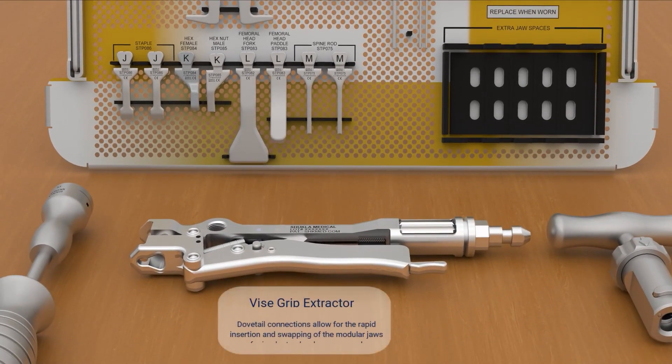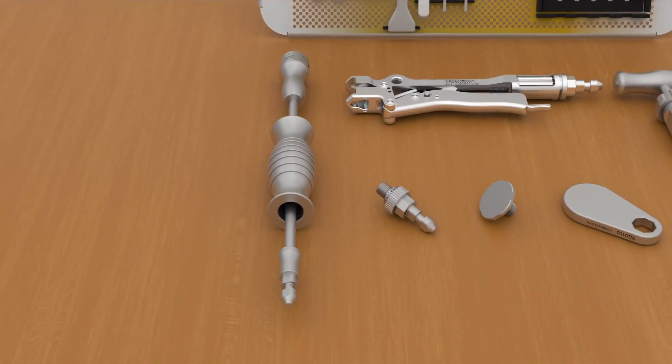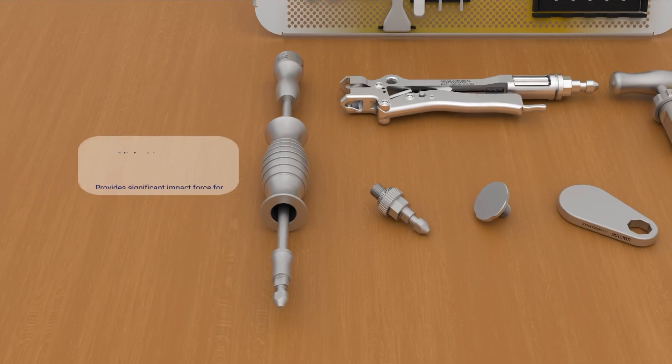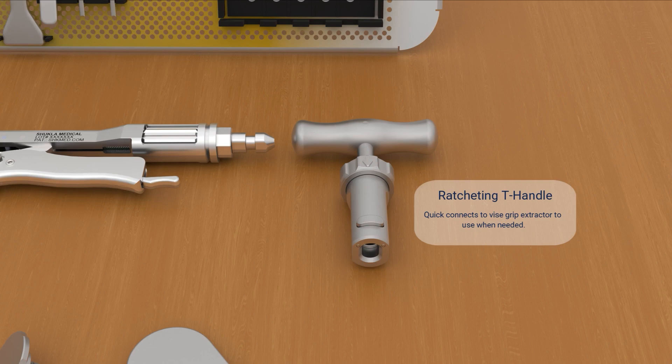The Vice Grip Extractor is used for holding the jaws in its dovetail slots and for gripping the implants. The slide hammer gets engaged with the extractor within moments via quick connect capability. The T-handle allows rotational and linear movement to the system.